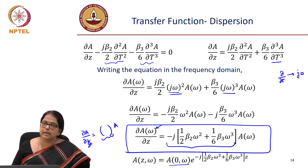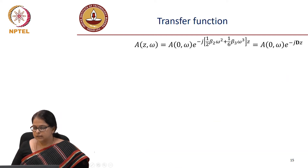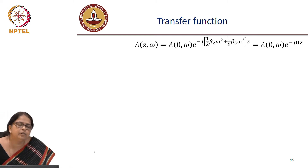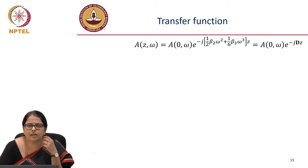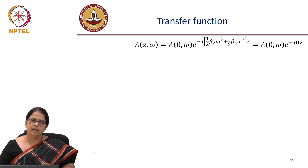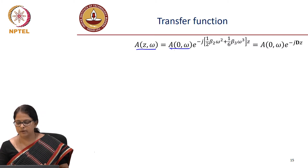That rate is nothing but minus j times one-half beta 2 omega squared plus one-sixth beta 3 omega cubed, times z because it is changing as a function of z. We simply get a nice form for the output frequency distribution given the input frequency distribution. It now comes down to something very simple — it is very straightforward to calculate what is the output pulse in both the frequency domain and time domain after it undergoes dispersion. The output a of z omega equals the input times this exponential.